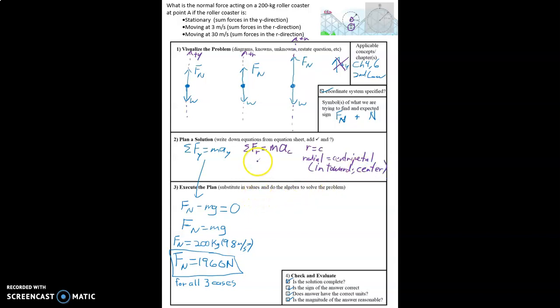Alright, so now we can look at this and say, let's take this equation down here. We can say Fn minus Mg equals M A C. Fn equals Mg plus M A C. And you know, from your equation sheet or from your book, that A sub C is equal to V squared over R, the speed squared divided by R.